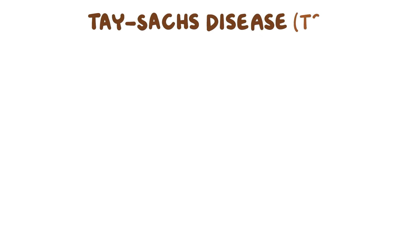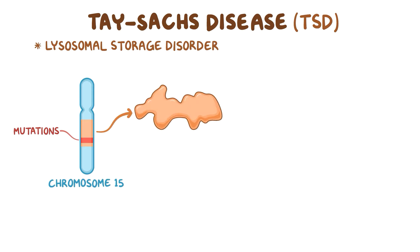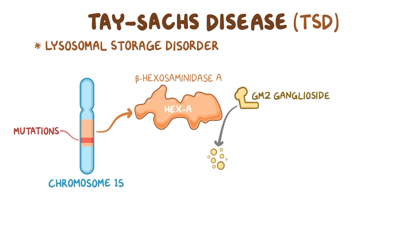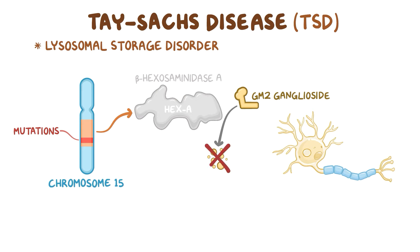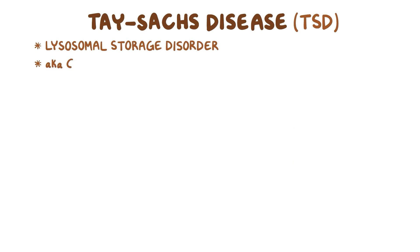Tay-Sachs disease, or TSD for short, is a lysosomal storage disorder caused by a mutation in a gene on chromosome 15 which codes for a lysosomal enzyme called beta-hexosaminidase A, or HEXA for short. This enzyme normally breaks down a lipid called GM2 ganglioside. GM2 is found mainly in neurons, so without HEXA it accumulates inside lysosomes. TSD is also known as GM2 gangliosidosis type 1.